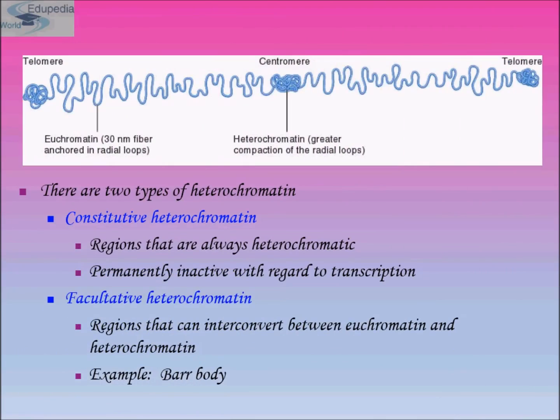Our body is composed of billions of cells. A typical cell contains a nucleus, and the nucleus contains chromatin. According to biochemists, the operational definition of chromatin is the DNA, protein, and RNA complex which are extracted from eukaryotic lysed interphase nuclei. Chromatin is the product formed from packaged special proteins commonly known as histones.